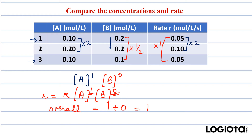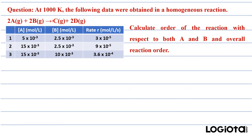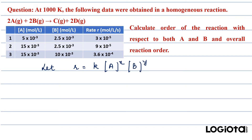If this type of question is given in a subjective exam, you need to follow formal steps. First, you write: let the rate law for this reaction be R = k · [A]^x · [B]^y, and we need to find the values of x and y. Since the reactants are A and B, we write them here. The concentration of B is the same in the first and second experiment, so from those we can find the order with respect to A. The concentration of A is the same in the second and third experiment, so from those we can find the order with respect to B.